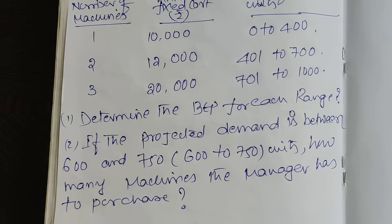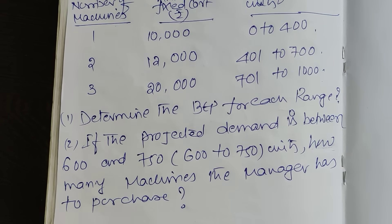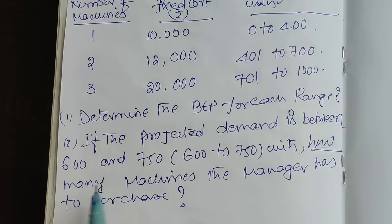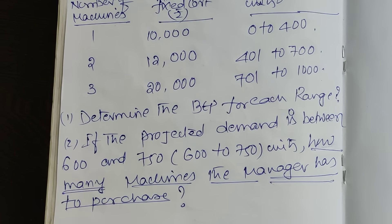See what is required in the question: calculate the breakeven point for each range. The second question is: if the projected demand is between 600 to 750 units, how many machines should the manager purchase? You have to take a decision based on the breakeven point.